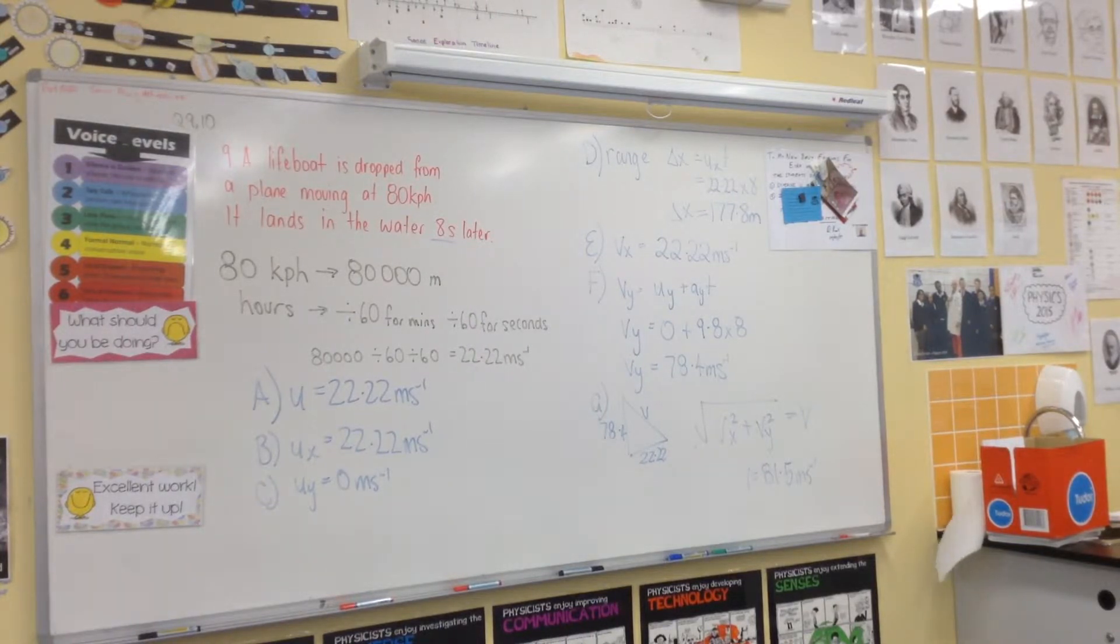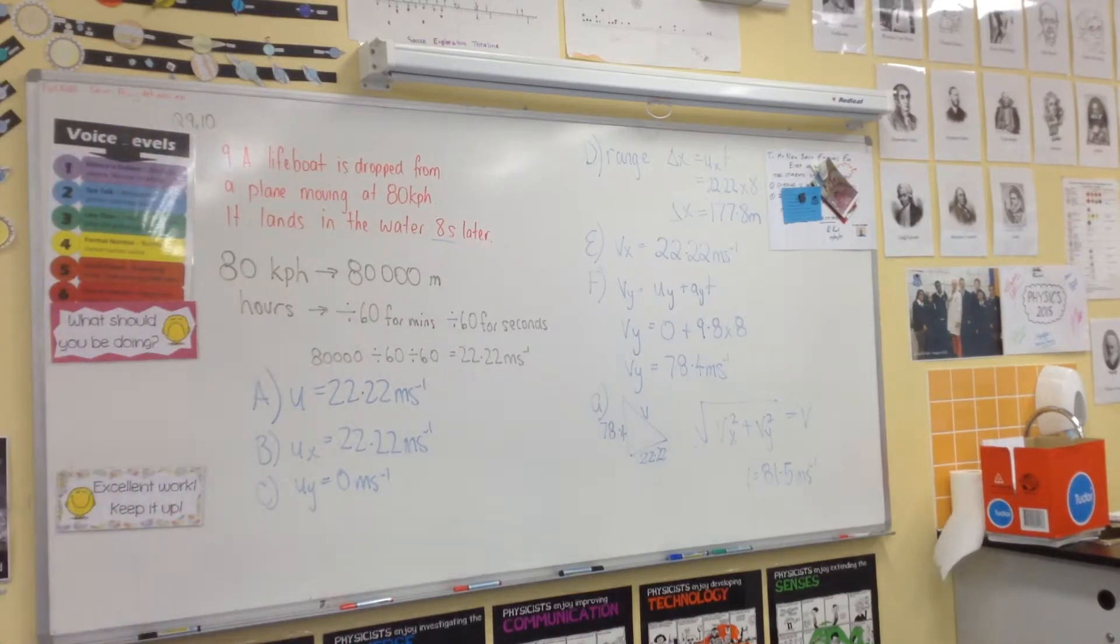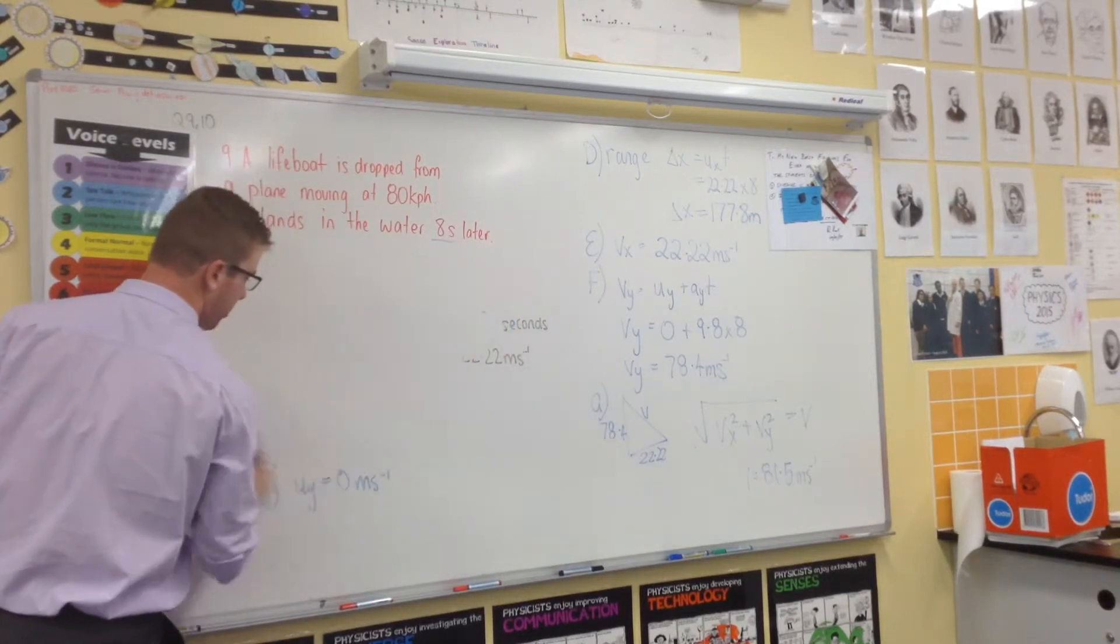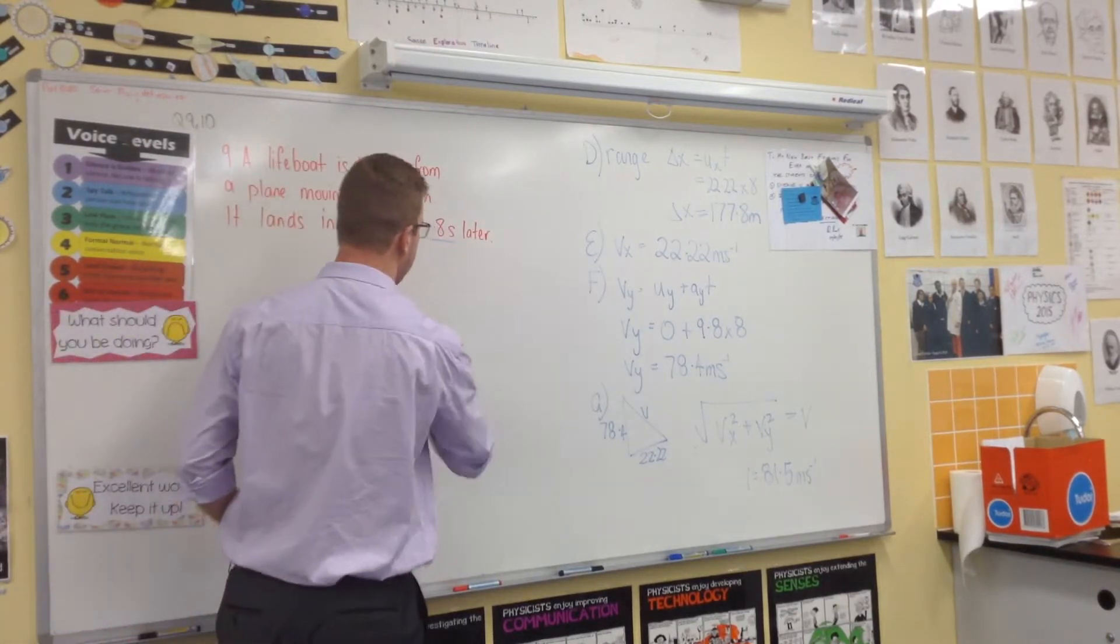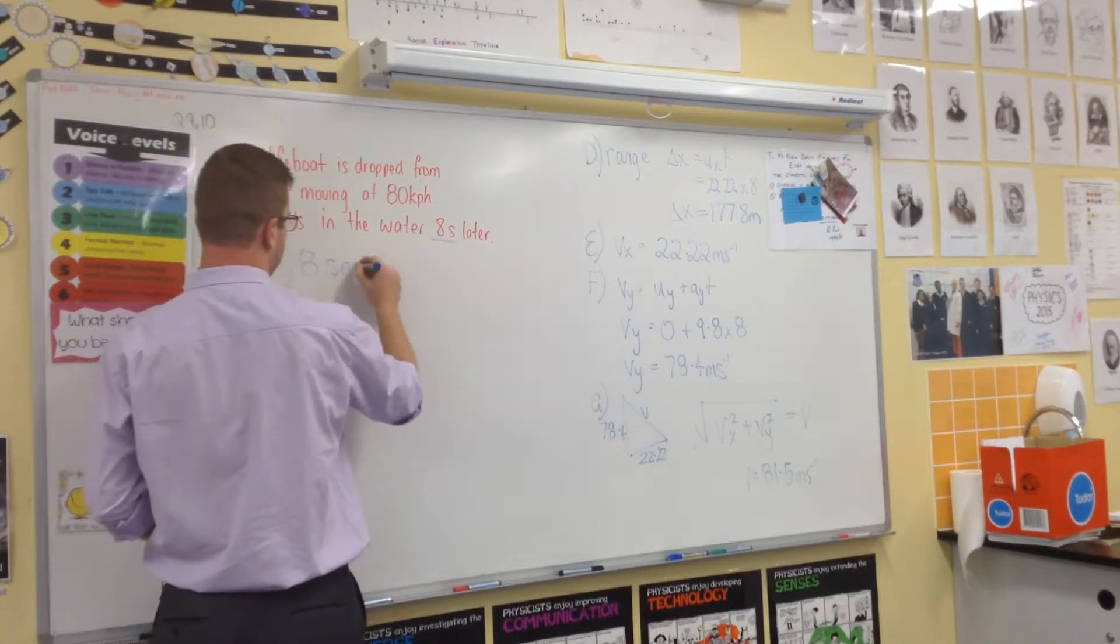Time taken to fall—I'm going to rub off this left side because we're going to need to use that to do the rest. We've got H: time taken to fall is already given to you, and that's 8 seconds. So H is 8 seconds.